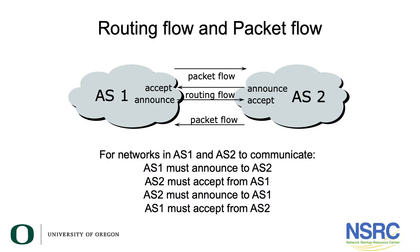We're now going to talk about routing versus packet flow. As you can see from the screen, there are two different ASs: AS1 and AS2. For networks in AS1 and AS2 to communicate, AS1 must first announce to AS2, and AS2 must then accept from AS1 for packets to flow from AS1 to AS2. For packets to flow from AS2 to AS1, AS2 must announce to AS1, and AS1 must then accept from AS2.